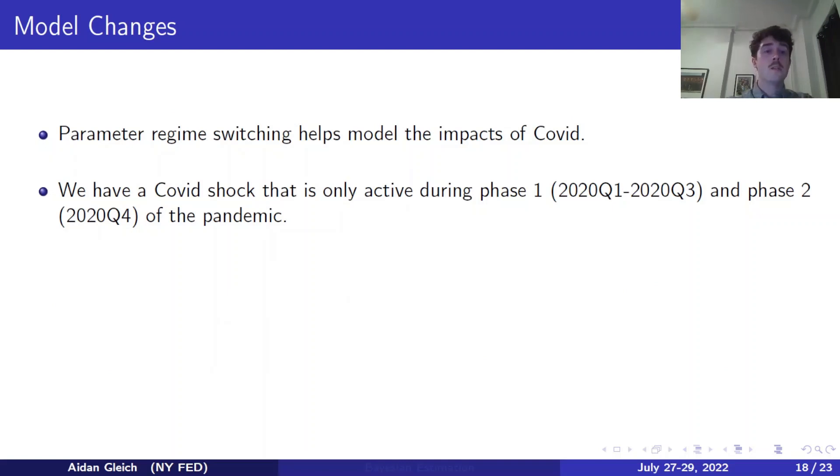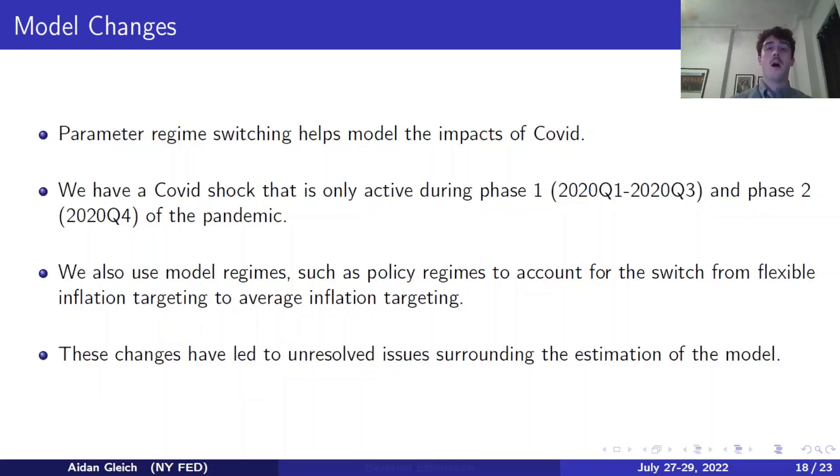So one of the first things that we did was institute parameter regime switching. What this means is that effectively we have time varying parameters. Some of our parameters may be set to zero during certain time periods and then be sort of turned on during other time periods. For example, we have COVID shocks, which are only active during phase one and phase two of the pandemic. So that would be 2020 Q1 through 2020 Q4. Otherwise, they're sort of nulled out or set to zero. Additionally, we have model regimes. Now, this means that we actually change the dynamics of the model itself, the equations, not just the parameters. For example, we have policy regimes to account for the switch from flexible inflation targeting to average inflation targeting. These changes have led to unresolved issues surrounding the estimation of the model, including the issues with online estimation that I spoke about before.